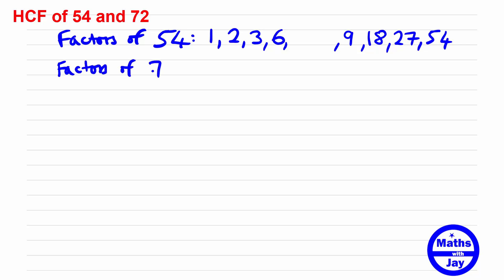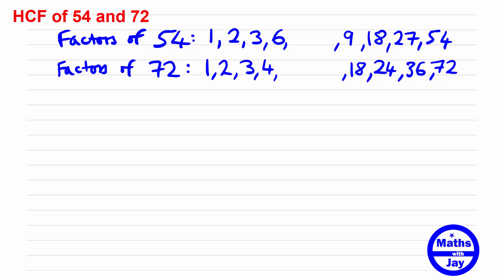The factors of 72 — we'll do this the same way. 1 times 72 is 72. 72 is even so we can halve it: 36 times 2 is 72. 3 goes in because 7 plus 2 is 9, which is a multiple of 3, so 3 into 72 is 24. 36 is even so 4 times 18 is 72. 5 doesn't go in because 72 doesn't end in 0 or 5. 2 and 3 go in so 6 must go in — that's 12 times. And 8 times 9 is 72.